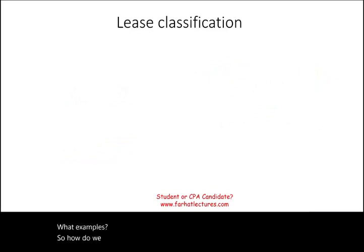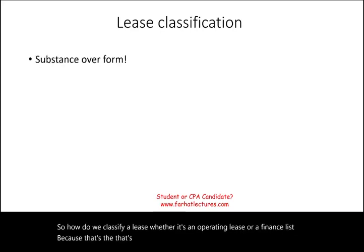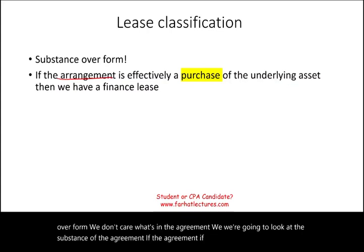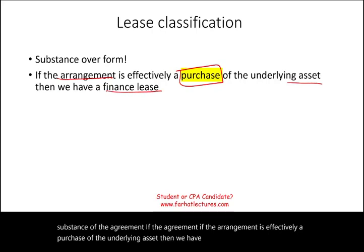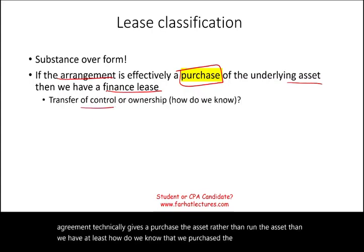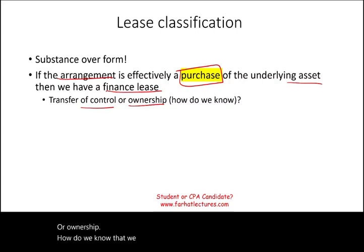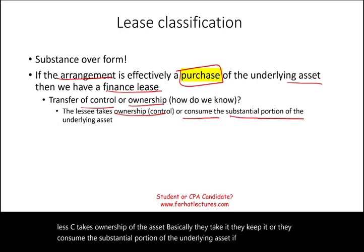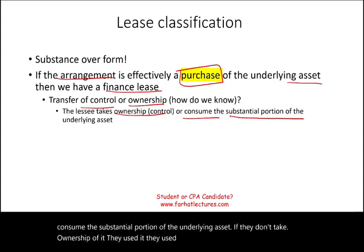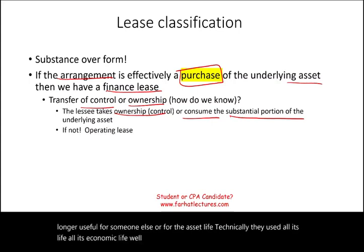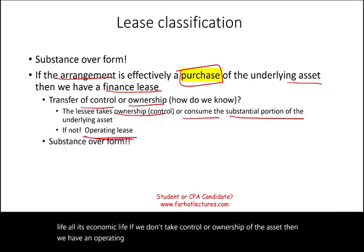So how do we classify a lease as operating or finance? We look at substance over form — we don't care what the agreement says on its face; we look at the substance. If the arrangement is effectively a purchase of the underlying asset, then we have a finance lease. There is a transfer of control or ownership: the lessee takes ownership, or they consume a substantial portion of the asset's economic life. If that doesn't happen, we have an operating lease. We need to be more specific by looking at specific conditions.